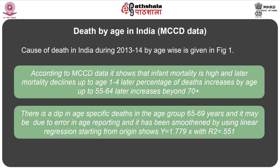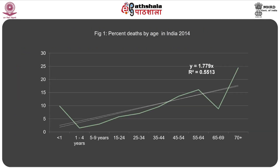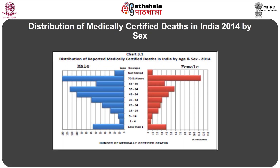Death by age in India from MCCD data: cause of death during 2013–2014 by age is given in Figure 1. It shows that infant mortality is high and later mortality declines up to age 1 to 4. The percentage of deaths then increases with age up to 55–64, and increases further beyond 70 plus. There is a dip in age-specific deaths in the 65–69 age group, possibly due to age reporting error, which has been smoothened using linear regression starting from the origin: Y = 1.779X, with R² = 0.551.